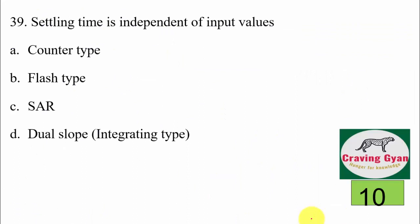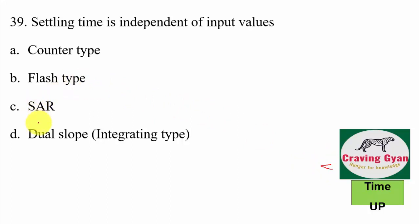39th question: settling time is independent of input values — in which type of A-to-D converter? In the case of SAR, the conversion time is fixed regardless of the input — whether you give 010, 011, or 101, the settling time remains constant. In dual slope, flash type, and counter type, conversion time depends on the input value. Hence option C, SAR, is correct.